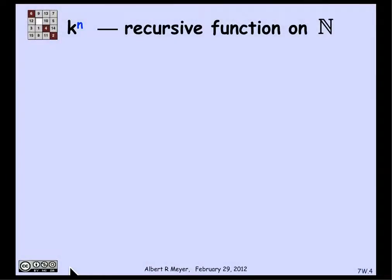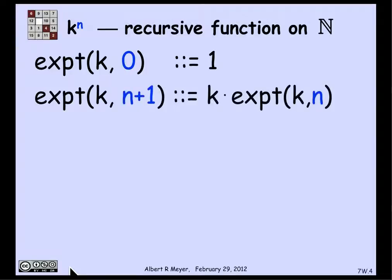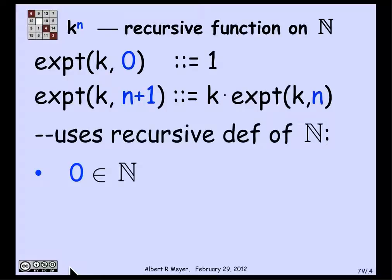Another familiar example of a recursive definition: the nth power of an integer or real number k. The 0th power of k is defined to be 1, and the n+1st power of k is defined to be k times the nth power of k. This is an executable definition of exponentiation, and this familiar recursive definition on a non-negative integer n is, in fact, a structural induction.